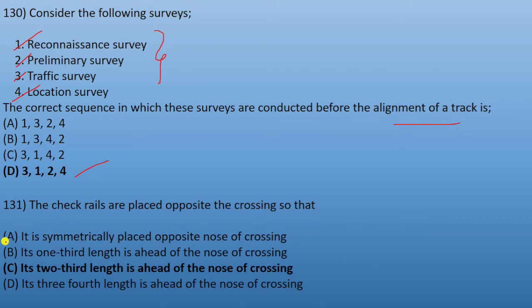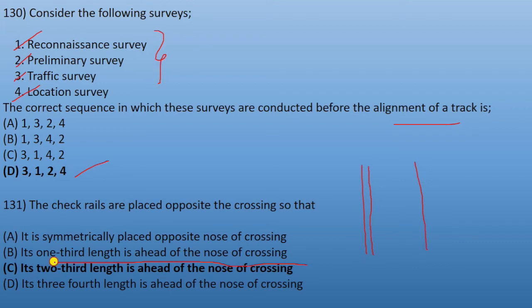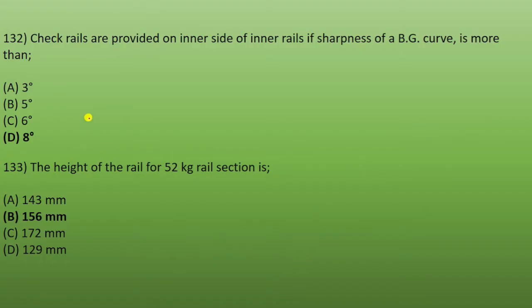Next: check rails are placed opposite the crossing. A check rail is placed such that its two-third length is ahead of the nose of the crossing. Next: check rails are provided on the inner side of inner rails when the sharpness of a BG curve is more than 8 degrees.